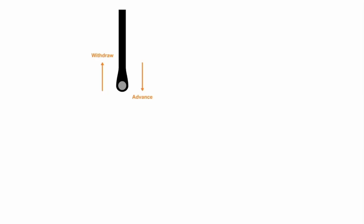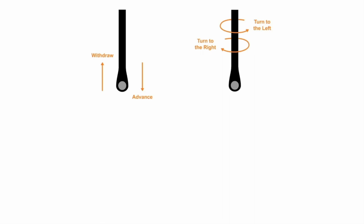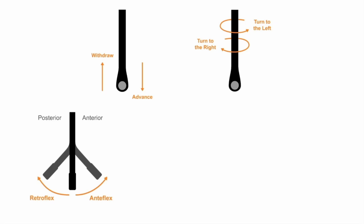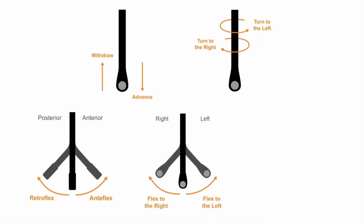To recap, there are four different ways in which we can physically manipulate the position of a TEE probe. The first is to withdraw or advance the probe up or down the patient's esophagus. Secondly, we can turn the probe to the right or to the left. Thirdly, we can selectively flex the tip of the probe in the anterior direction, known as anti-flexing, or in the posterior direction, known as retroflexing.